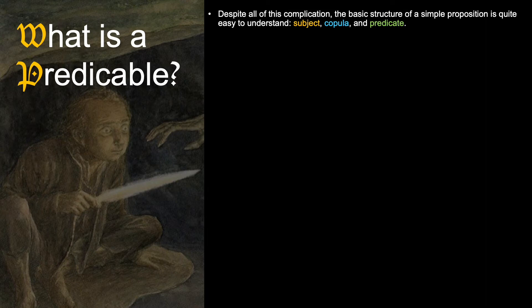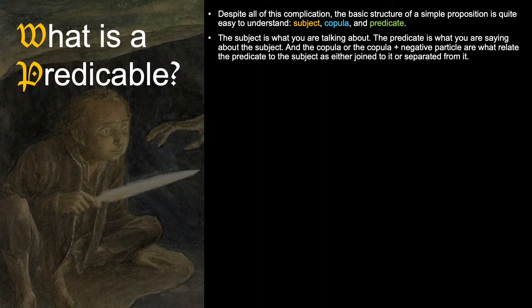Despite all of this complication, the basic structure of a simple proposition is quite easy to understand: subject, copula, and predicate. The subject is what you are talking about; the predicate is what you are saying about that subject. The copula—or the copula plus negative particle—relates the predicate to the subject as either joined to it, as in an affirmative proposition, or separated from it, as in a negation. For instance, 'Socrates is wise': is establishes that the predicate is joined to the subject. But 'Socrates is not wise': is not establishes that the predicate is separated from the subject.